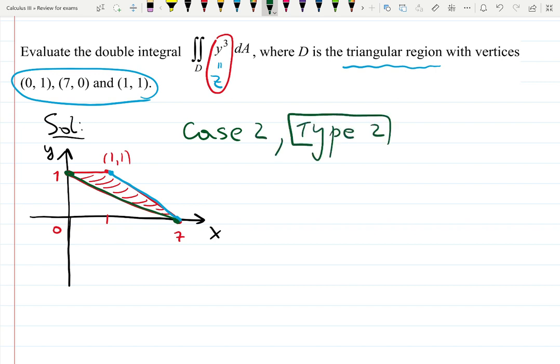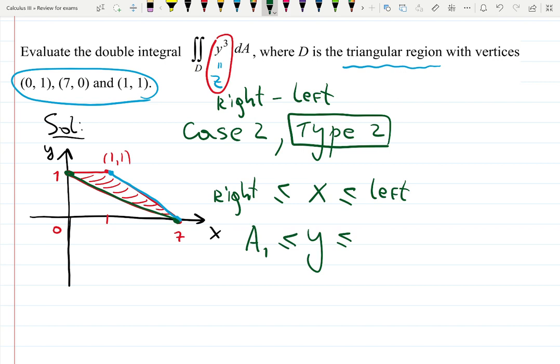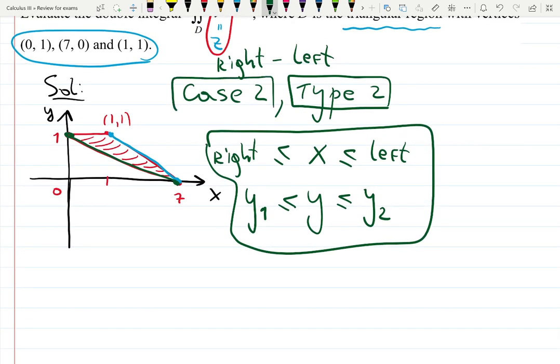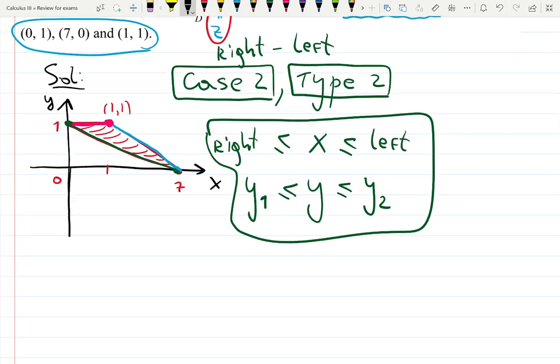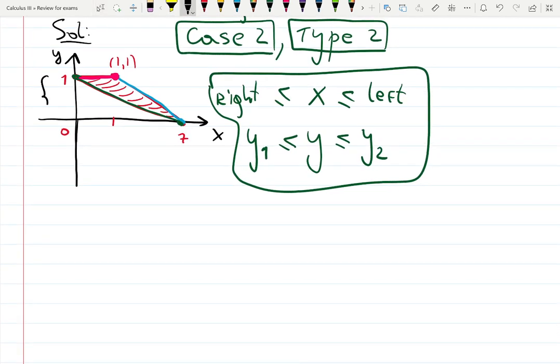Type two depends on the book—basically right minus left versus top minus bottom. That means x will be between functions, which is exactly right minus left. You always do larger minus smaller. Y will be between numbers, let's call them y₁ and y₂. That's basically what I mean by case two or type two. Case one or type one will look like this: everything is on the top and everything is at the bottom.